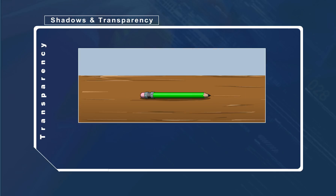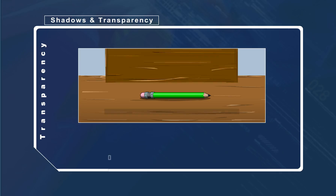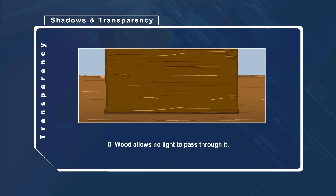Materials or objects such as bricks and wood allow no light to pass through them. We are unable to see through these objects. We describe this type of material or object as opaque.